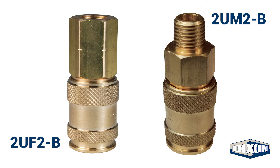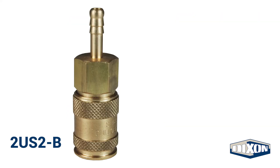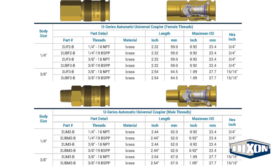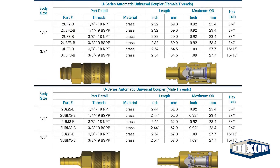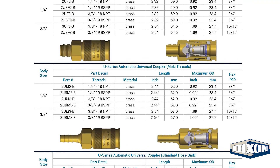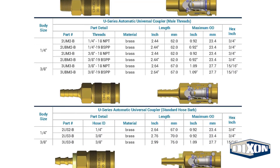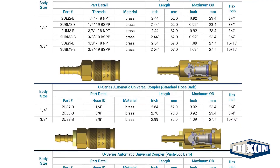U-Series are available as threaded couplers, standard hose barbs, and push-on hose barbs. Body sizes are ¼ inch and ¾ inch with NPT and BSPP threads.